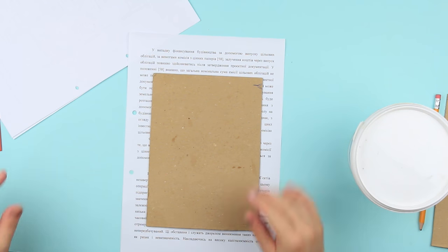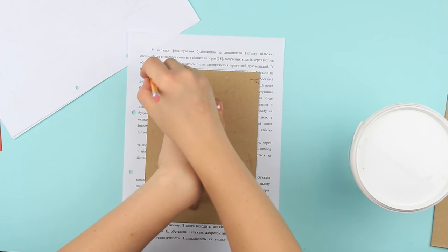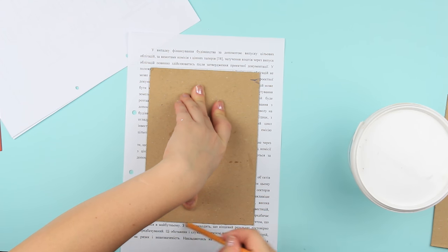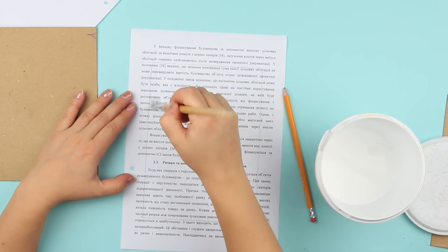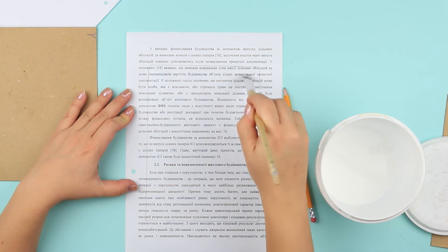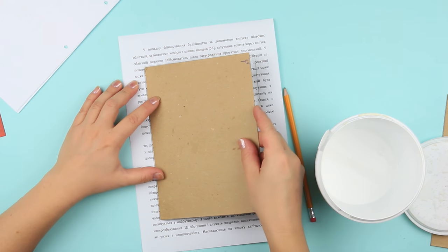Trace a square on an office paper sheet to mark a glue area. Cover the paper with glue inside the margins. Attach the cardstock.